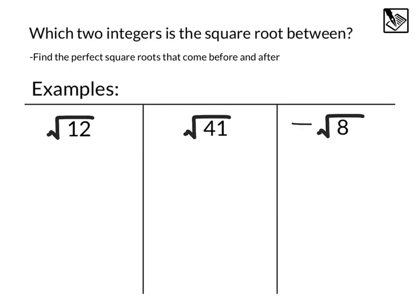So the first thing we could do to make a good estimation is find the integers that the square root is between, and what we're going to do for that is find the perfect square roots that come before and after. Just as a reminder, a perfect square root means that there is some number squared goes into it exactly, like 1 times 1 is 1, so 1 is a perfect square root. 2 times 2 is 4, 4 is a perfect square root.